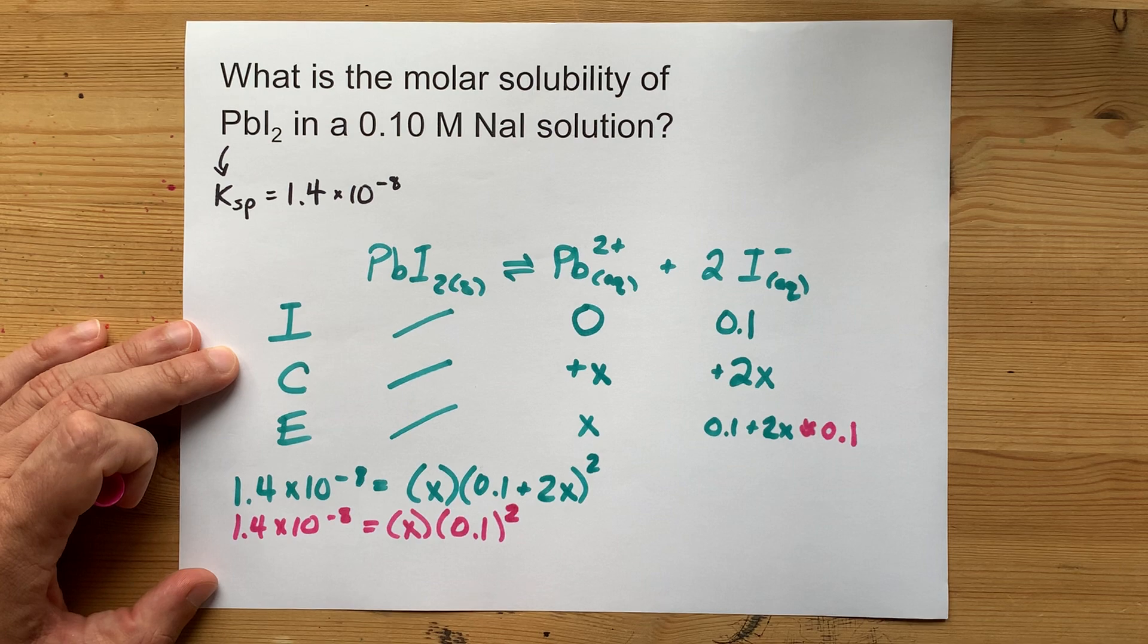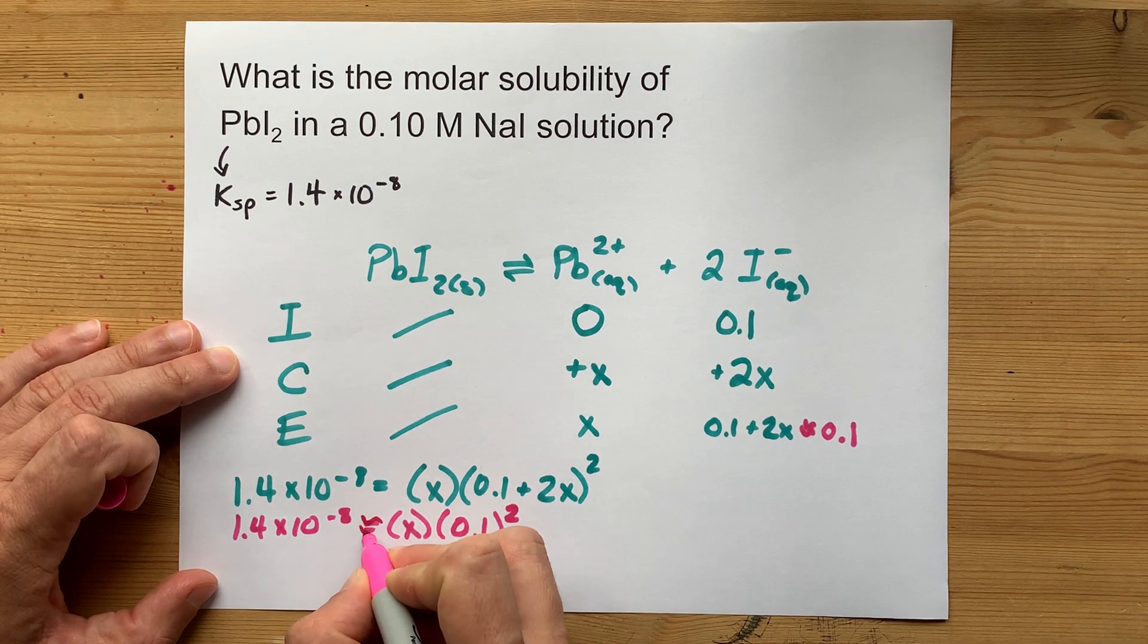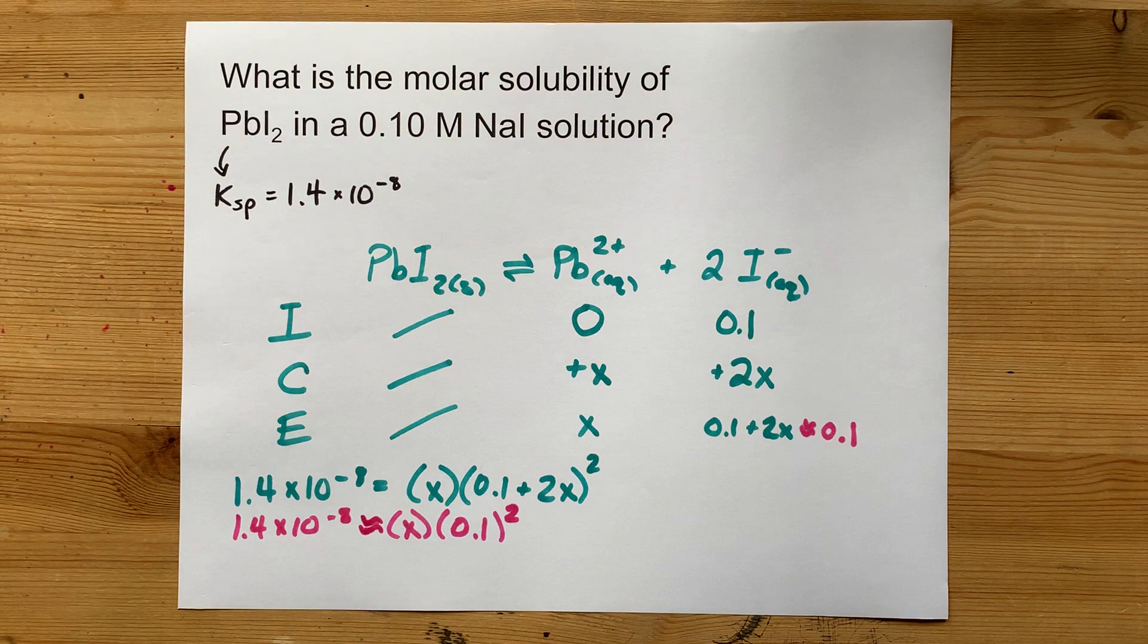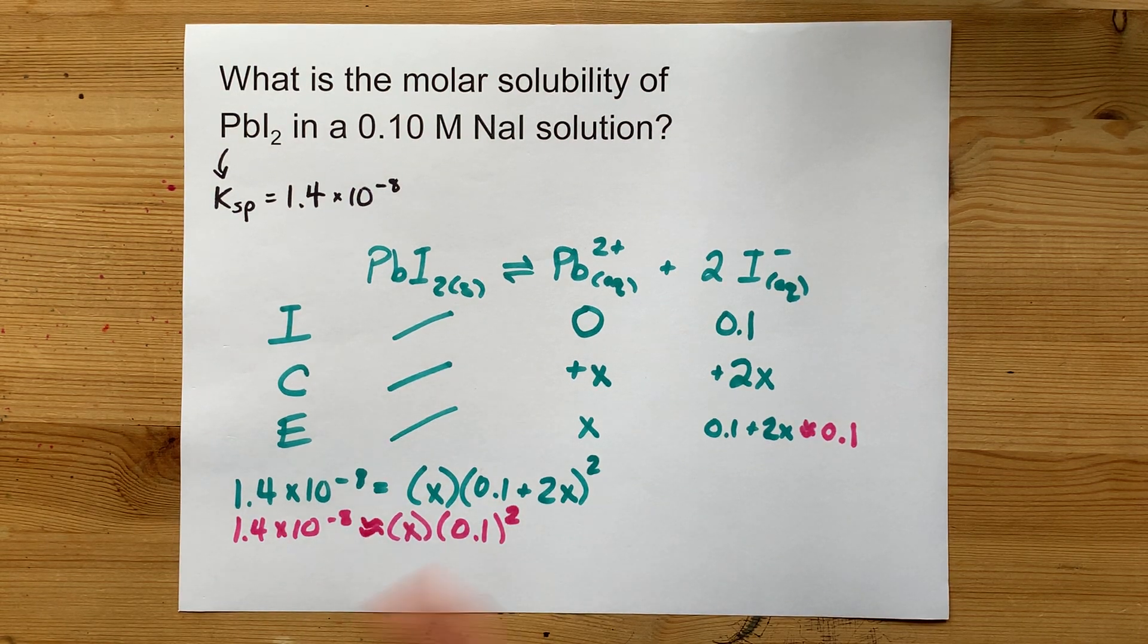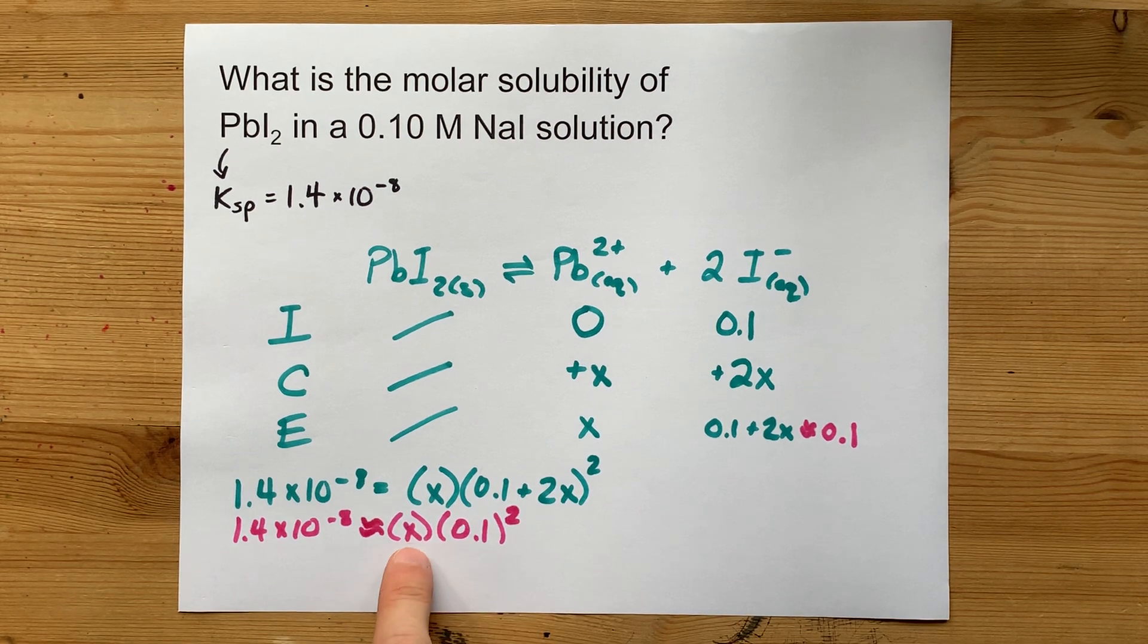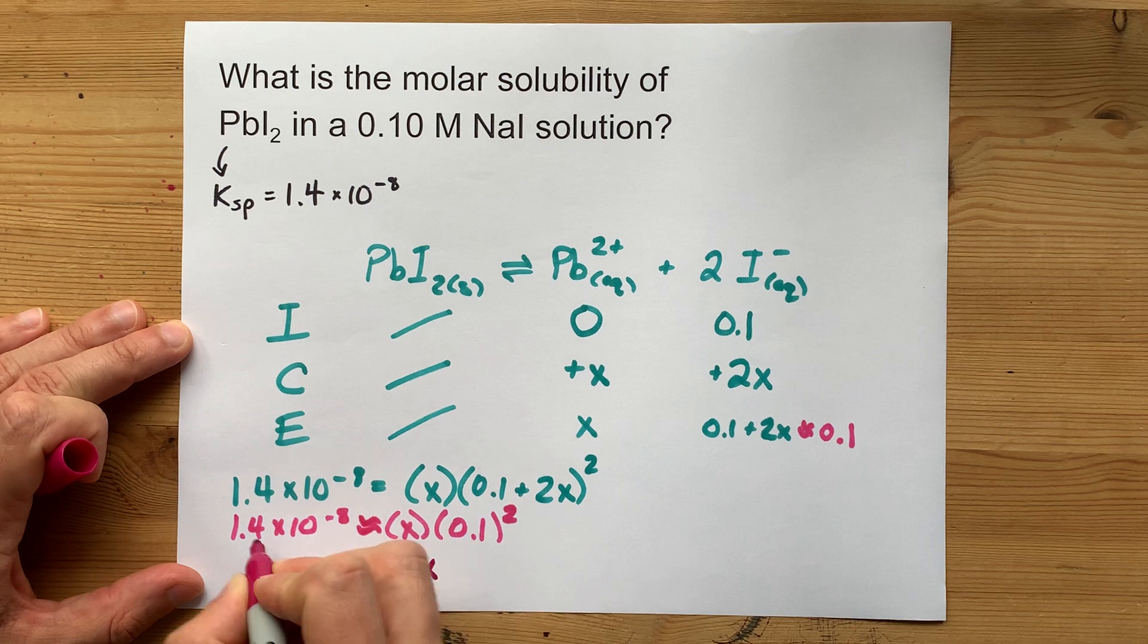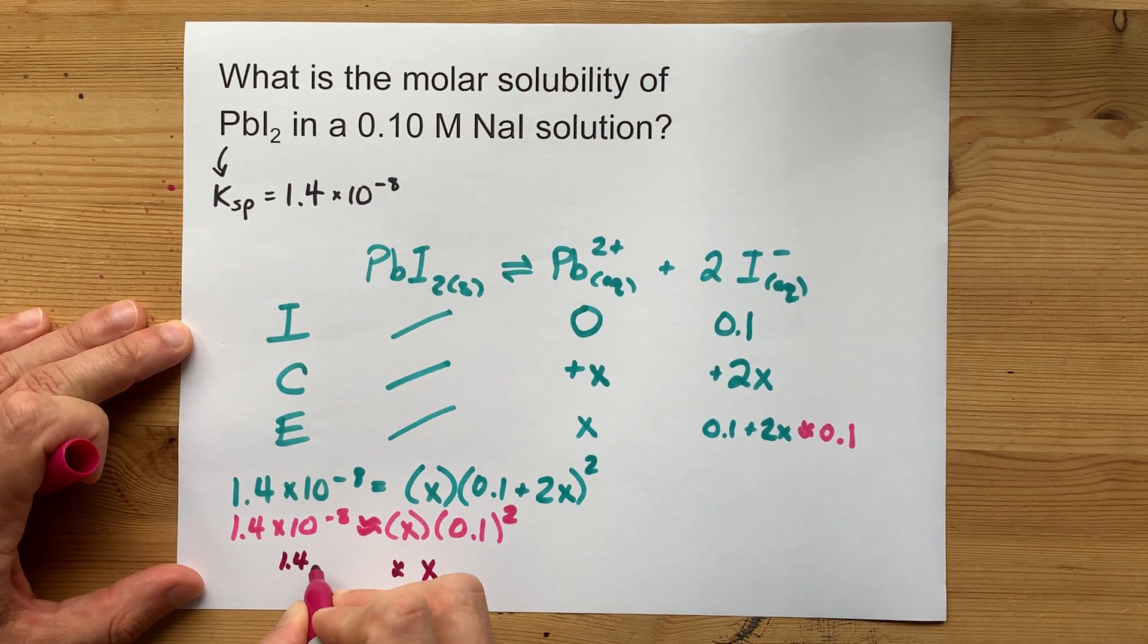It might be better if I say approximately here, and your job is to solve this equation, which is much more reasonable. 0.1 squared is 0.01, and so to solve for X, we really just have to divide this side by 0.01.